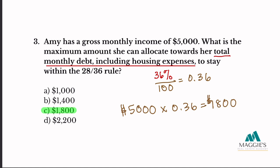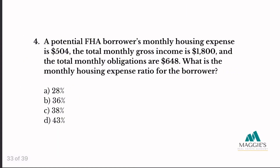Number four: a potential FHA borrower's monthly housing expense is $504, the total monthly gross income is $1,800, and the total monthly obligations are $648. What is the monthly housing expense ratio? Since they're asking for the monthly housing expense ratio and no one's ratio should exceed 28%, the answer is A.